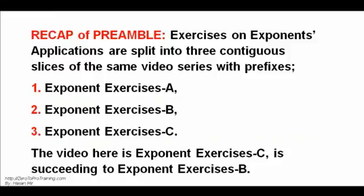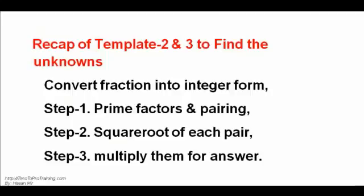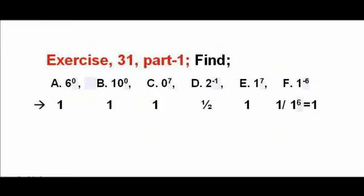Exponent Exercises C is here, succeeding its B. Recap of Template 2 and 3 to find unknowns: Step 1 — convert fraction into integer form. Step 2 — Prime Factors and Pairing. Step 3 — Square root of each pair. Step 4 — Multiply all four. Answer.